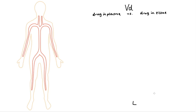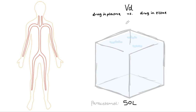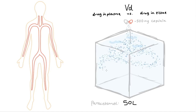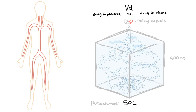VD is usually given as a number of litres. For paracetamol, it's around 50 litres. So here we've got a 50 litre box filled with water. We're going to crack open this little 500 milligram capsule of paracetamol and empty it in. If that paracetamol then spread out perfectly evenly, we'd have 500 milligrams across 50 litres, or 10 milligrams per litre.